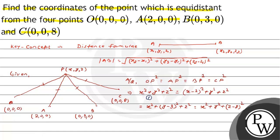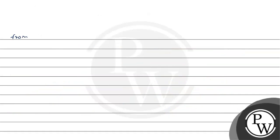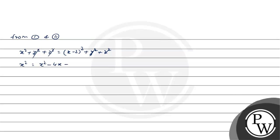From equations 1 and 2: x²+y²+z² = (x−2)²+y²+z². The y² and z² cancel, giving x² = x²−4x+4. The x² cancels and 4x = 4, so the value of x is 1.